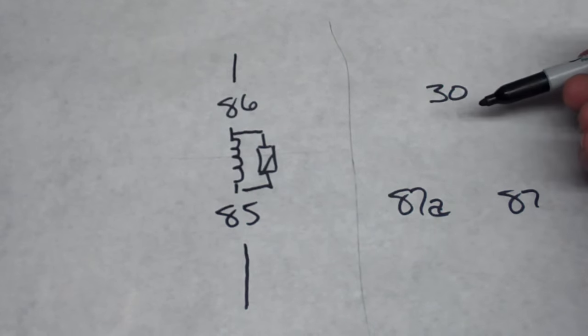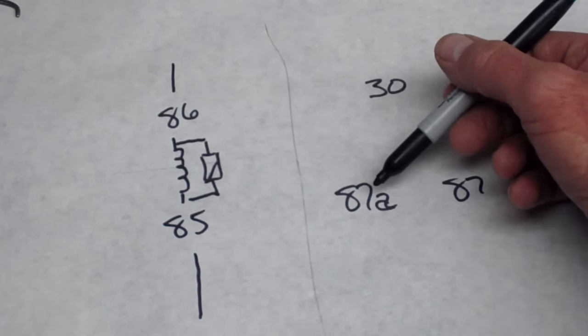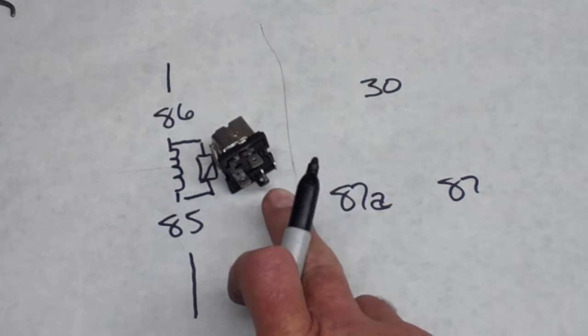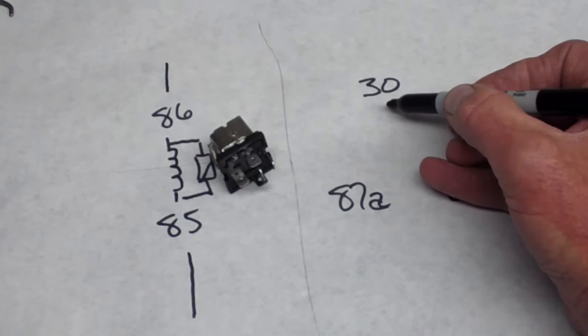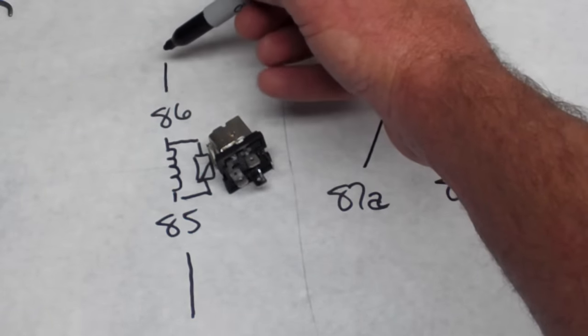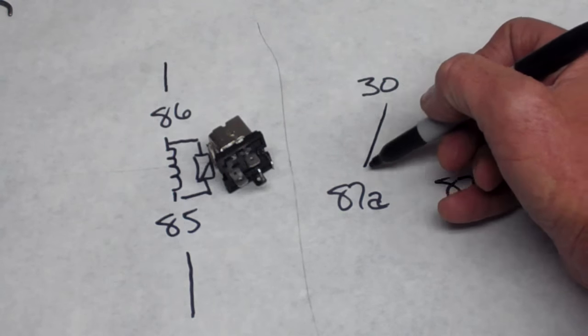That brings us to this side of the relay, pin 30, 87A, and 87. For this style of relay, the normal position, so no current flowing through 86 and 85, is from 30 to 87.